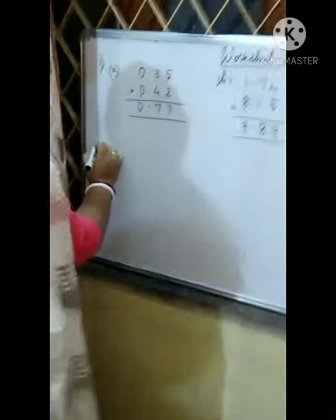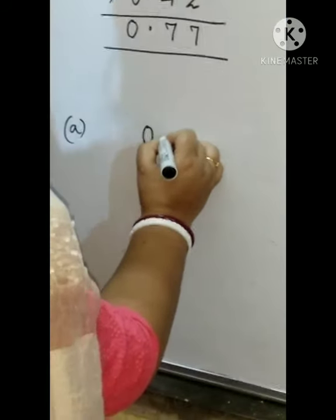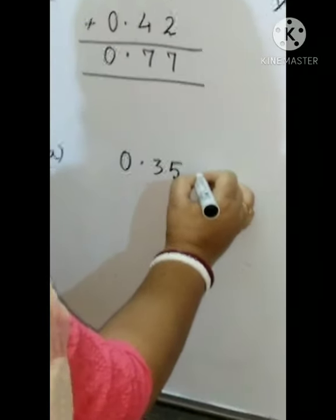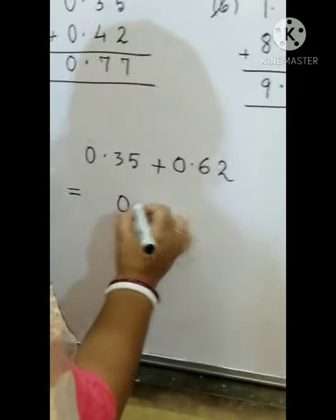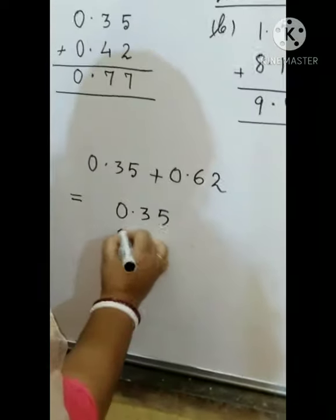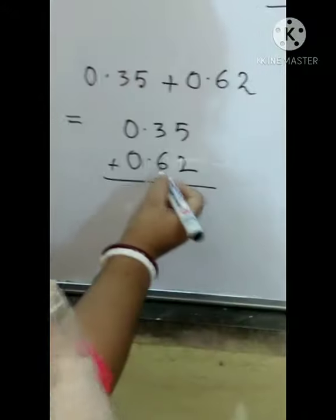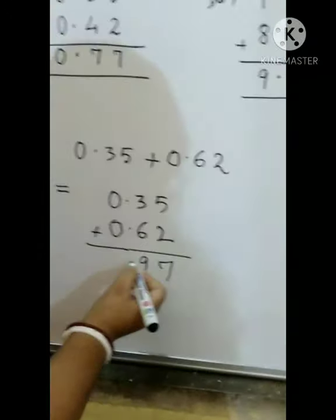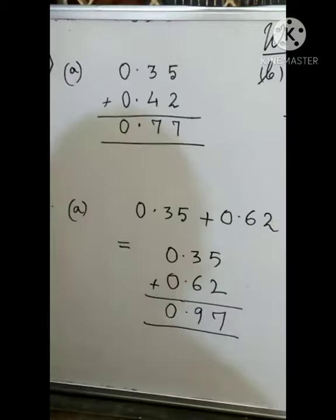Now come to question number 2. Here you need to arrange first. You will arrange the digits and then you will add it. Question number 2A: arrange in column and add. It is 0.35 plus 0.62. So in the next line you add in column. First you arrange it: 0.35, here you will write 0.62. First arrange in columns and then you add. Now it's similar to question number 1. So 5 plus 2 is 7, 3 plus 6 is 9. Add 0 plus 0 here, and 0 plus 0 is 0. So the answer is 0.97.